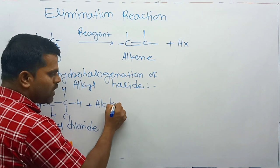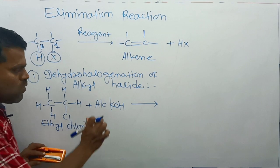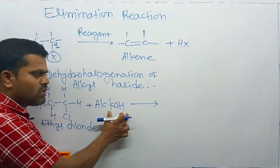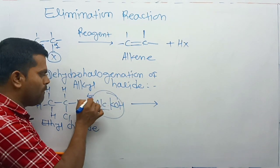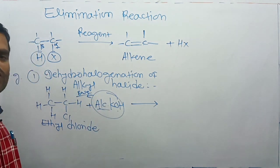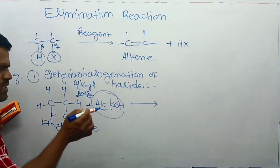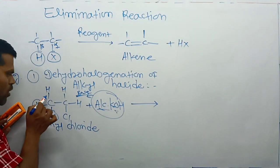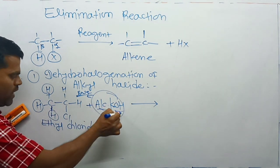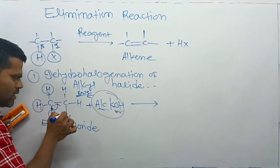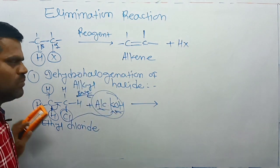This ethyl chloride is reacted with alcoholic KOH. Alcoholic KOH means the KOH solution is prepared in alcohol, and at that time it acts as a base. What is the role of KOH? Since KOH is prepared in alcohol, it acts as a base, and this base will abstract an acidic proton. This proton will be abstracted by OH⁻, and this bond pair will shift, and this chlorine atom is immediately eliminated.